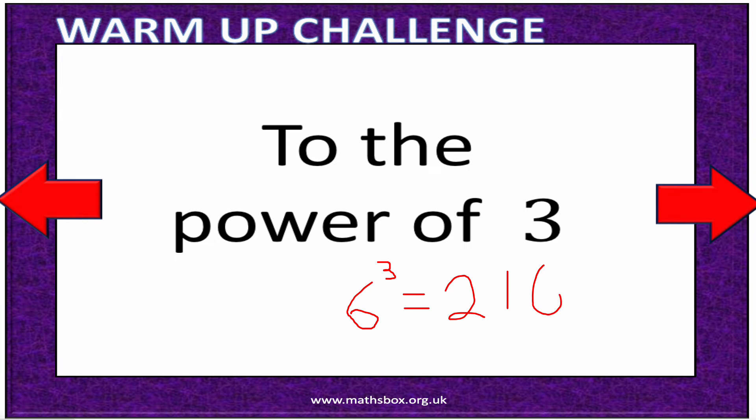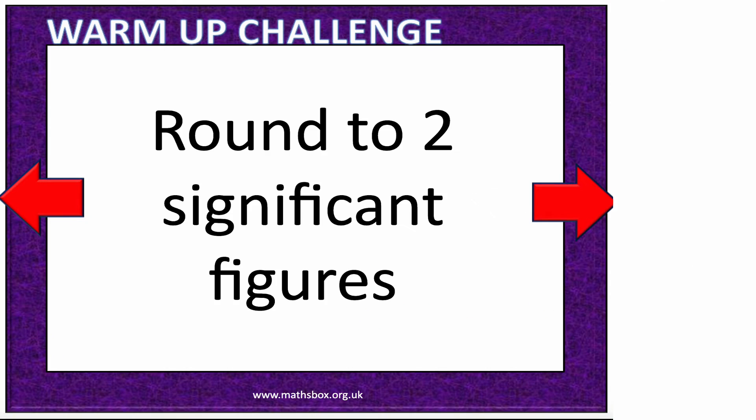So 216 rounded to two significant figures gives me 220. Remember that a significant figure means the first non-zero number. So this is my first significant figure, my second one, and then the zeros fall after. That would be my third significant figure, but I've rounded it here to two significant figures.